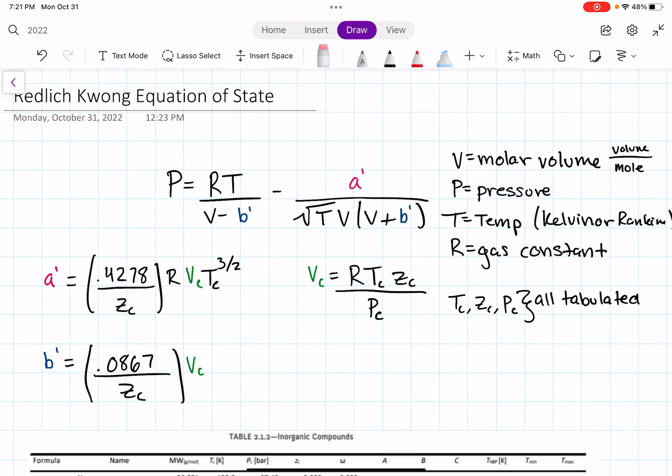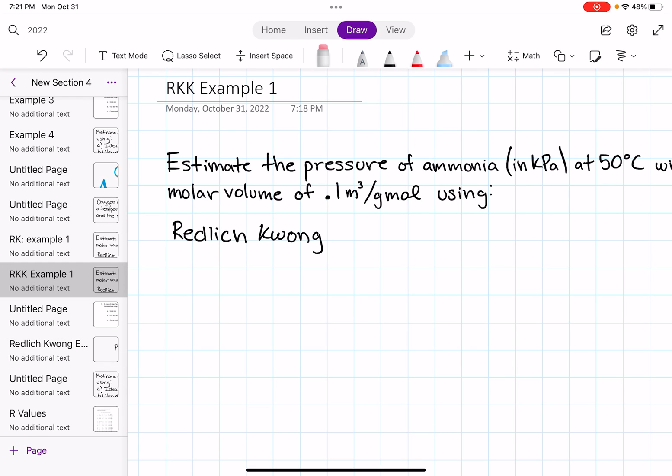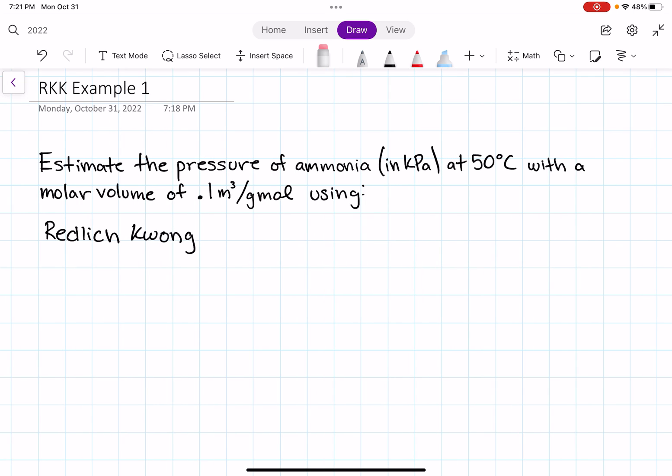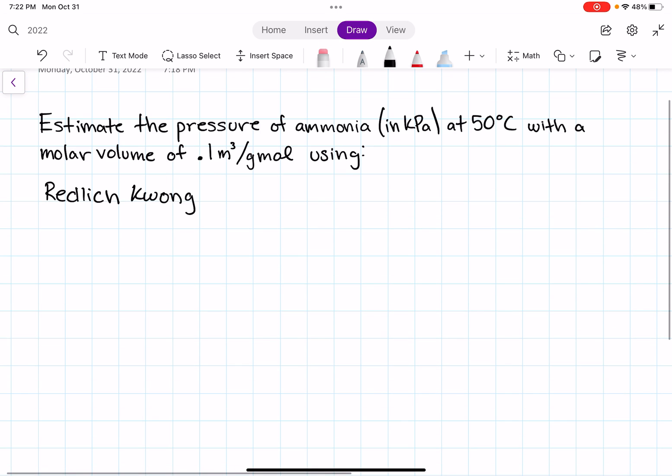Now we're going to actually work on an example for the Relic-Kwong equation of state. Here's the first question: Estimate the pressure of ammonia in kilopascals at 50 degrees Celsius with a molar volume of 0.1 meters cubed per gram mole using Relic-Kwong. So I'm going to go ahead and start solving by writing down the formula for Relic-Kwong. And again, here the temperature is going to be in absolute temperature, so either Rankine or Kelvin.